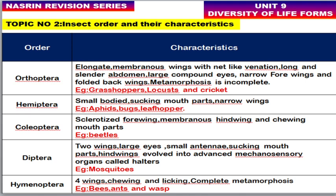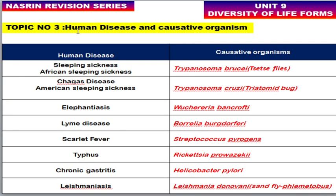The third topic is human diseases and their causative organisms. African sleeping sickness is caused by Trypanosoma brucei, and the vector is the tsetse fly. Chagas disease, also called American sleeping sickness, is caused by Trypanosoma cruzi, and the vector is the triatomine bug. Elephantiasis is caused by Wuchereria bancrofti. Lyme disease is caused by Borrelia burgdorferi.